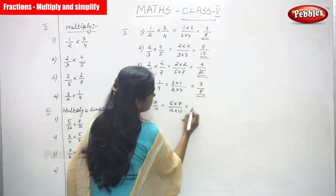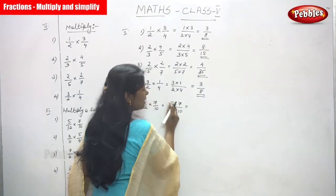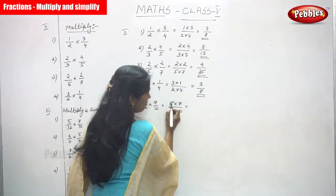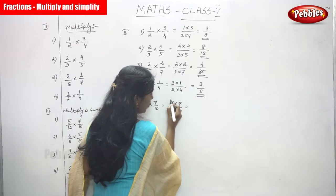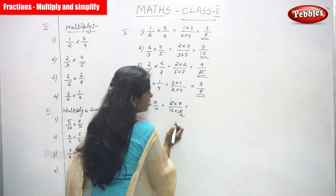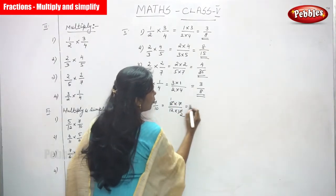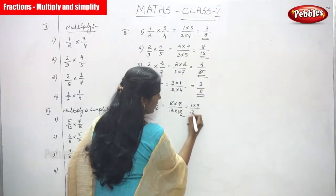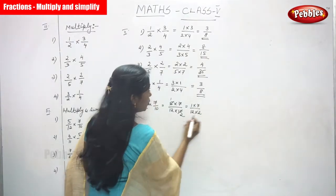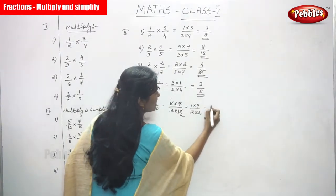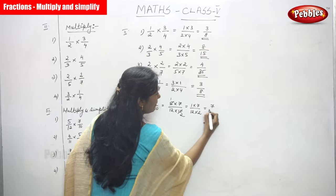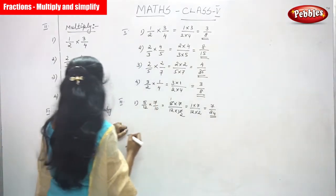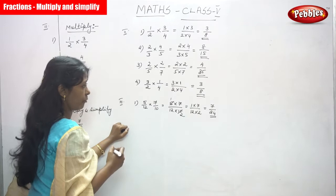Look at the sum. For 5 × 7 divided by 12 × 10, you can cross-cancel the numbers. 5 and 10 share a factor of 5: 5 ÷ 5 = 1 and 10 ÷ 5 = 2. So we get 1 × 7 divided by 12 × 2, and the answer is 7/24.